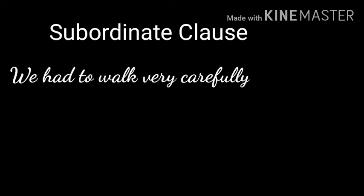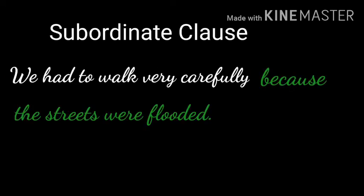Another example: We had to walk very carefully because the streets were flooded. Here, we had to walk very carefully is the main clause, and the subordinate clause is because the streets were flooded. The first part, we had to walk very carefully, can stand independently because it is the main clause — it has complete meaning. The second part, because the streets were flooded, has no complete meaning without the main clause. That is the difference between main clause and subordinate clause.